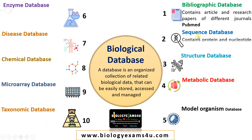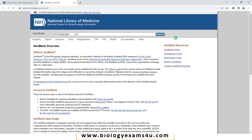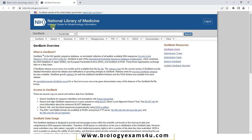The second database is a sequence database. It contains protein and nucleotide sequences. Examples include GenBank, DDBJ — DNA Data Bank of Japan — and PIR, Protein Information Resource, which is regarding amino acid or protein sequences. Let us see the home page of GenBank. This is the home page of GenBank, which is also maintained by NCBI.